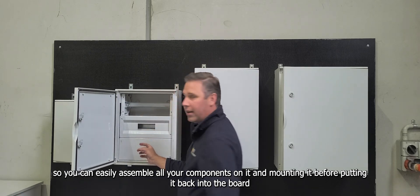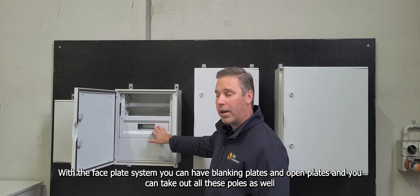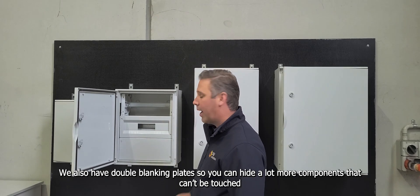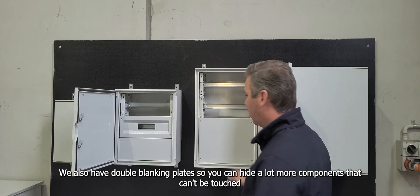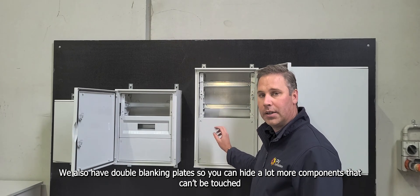With the face plate system you can have blanking plates and open plates and you can take out all these poles as well. We also have double blanking plates so you can hide a lot more of components that can't be touched.